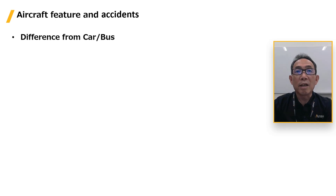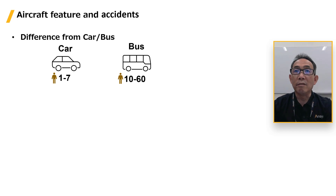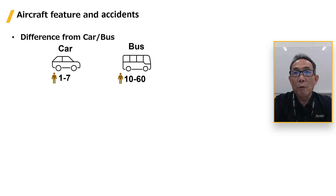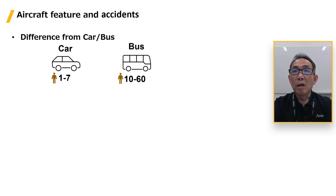Comparing cars and aircraft as vehicles, there is a significant difference in the number of passengers. Excluding commercial buses, a car usually carries one or two passengers, while a family might have up to seven. Of course, there is a considerable difference among countries and regions.